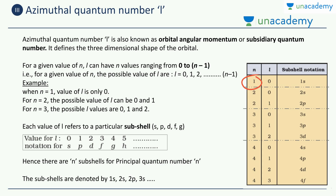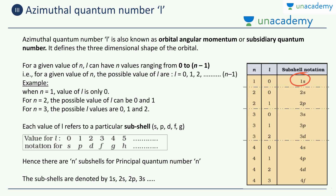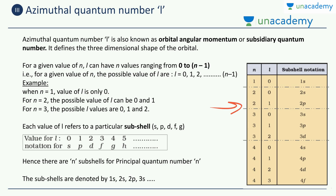For N equals 1, the only possible value of L is 0, which is denoted as 1s — the '1' comes from N and the 's' comes from L=0. For N equals 2, there are two values of L: 0 and 1. The notation 2s means we are in the second shell with the s sub-shell, and 2p means the second shell with the p sub-shell, since L=1 denotes p. This is how you continue for N equals 3 and N equals 4 as well.